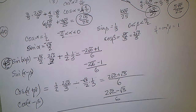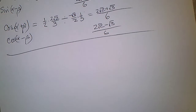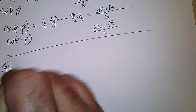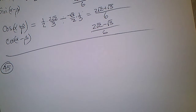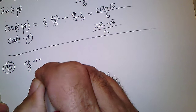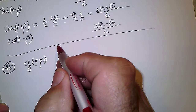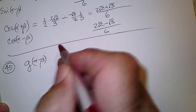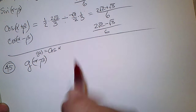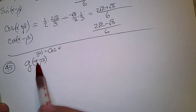That's problem 45. Problem 45 says use the figures in the book to find G of alpha minus beta, where G is the cosine function. So we want cosine of alpha minus beta.